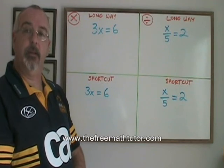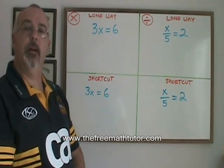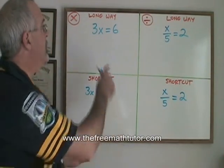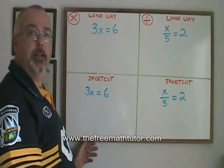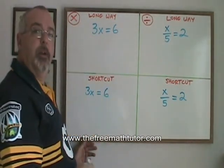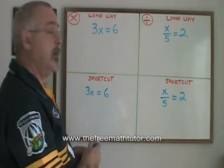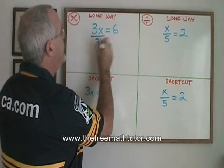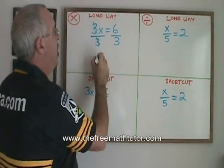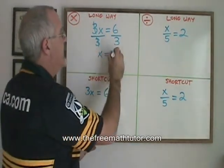When doing basic algebra skills with multiplication and division, there is also a basic algebra shortcut, which works the same way. In this first equation, I have 3x equals 6. My x is being multiplied by a 3. So what I do is the opposite — I divide by 3, but I have to divide both sides by 3. These 3s cancel, my x is isolated, and is equal to 6 divided by 3, which is 2.